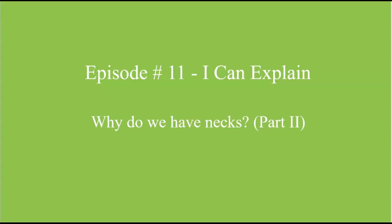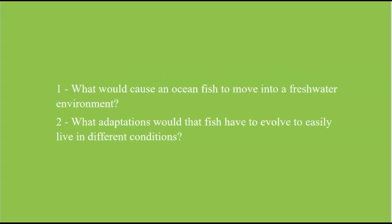Episode 11 of I Can Explain. This video is a continuation of the previous video, 'Why Do We Have Necks? Part 1.' In that video, I ended with two questions. One, what would cause an ocean fish to move into a freshwater environment? And two, what adaptations would that fish have to evolve to easily live in different conditions?